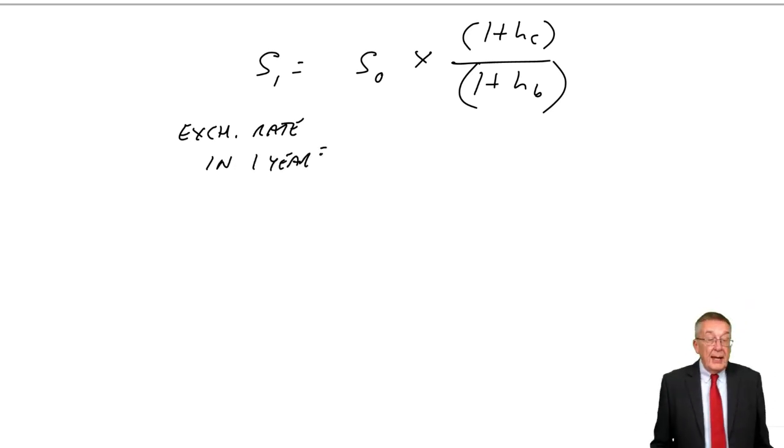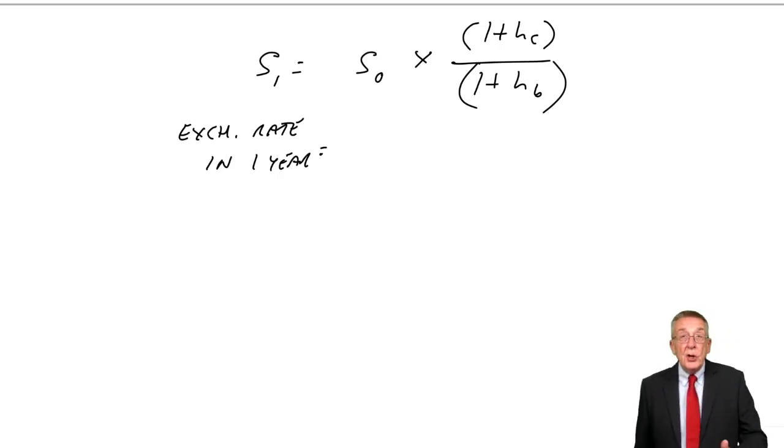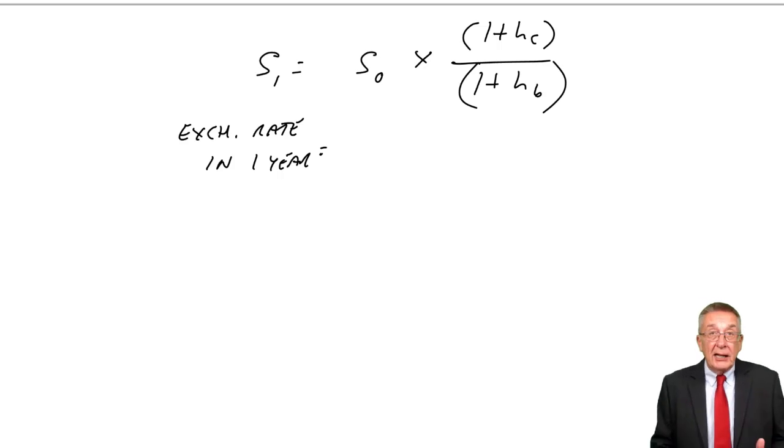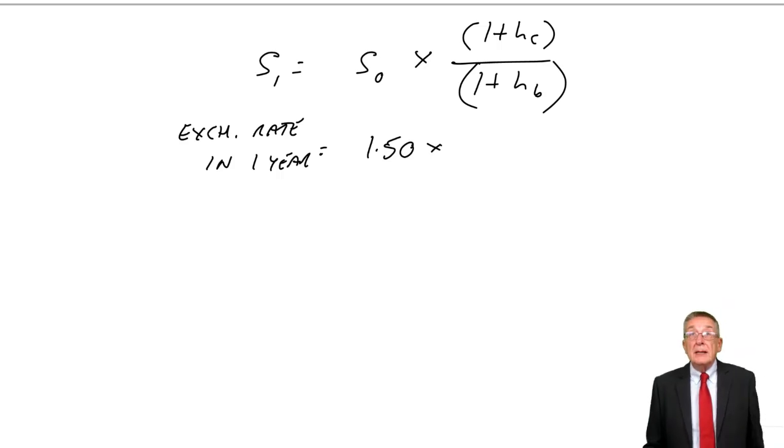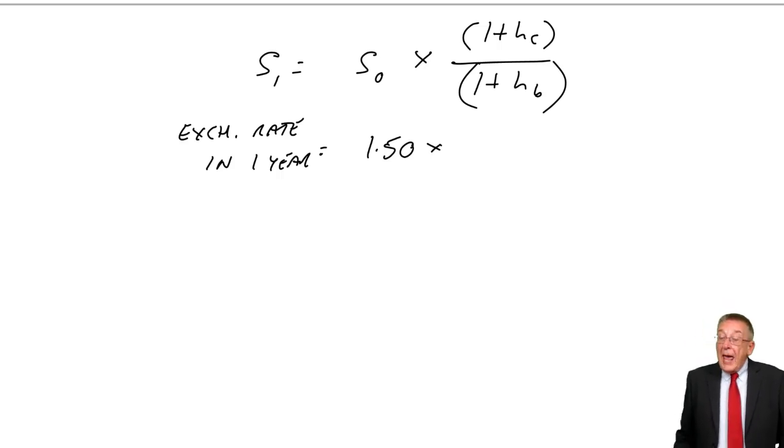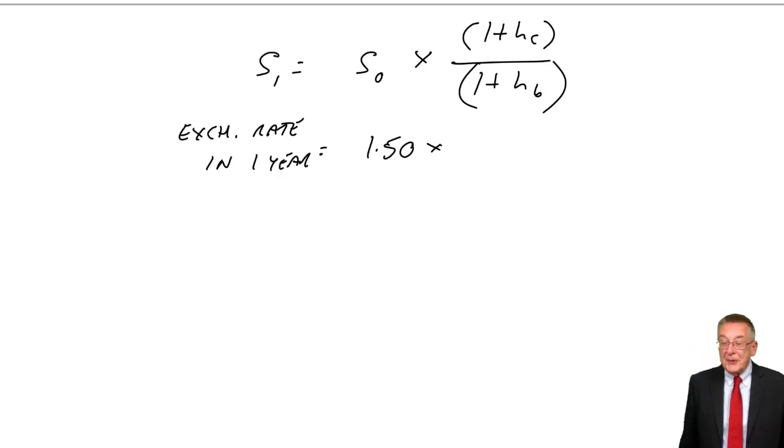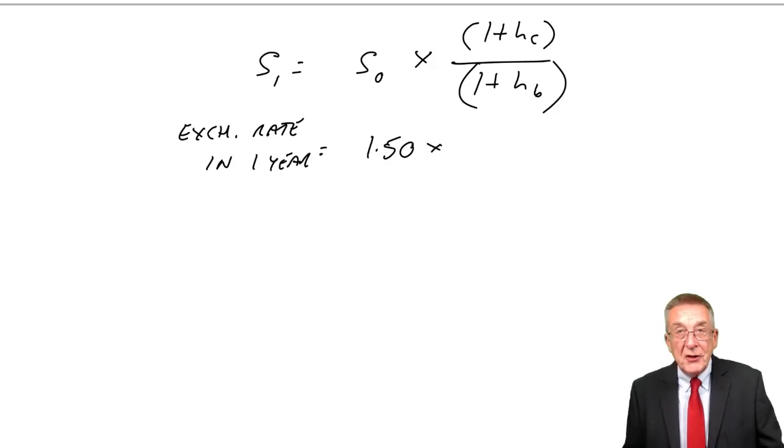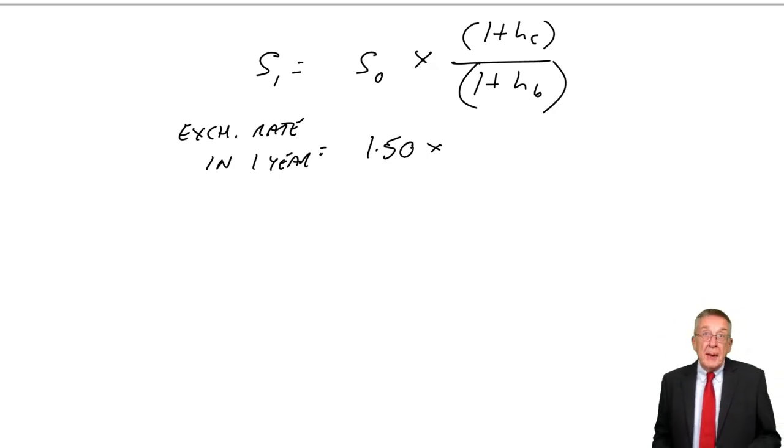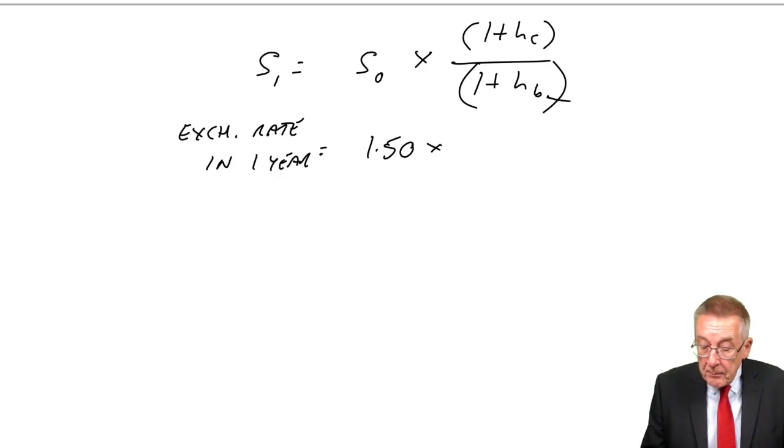If I explain the symbols using the same illustration we just looked at, S0 is the spot rate now, today's exchange rate, which is 1.50. H in both cases is the rate of inflation.